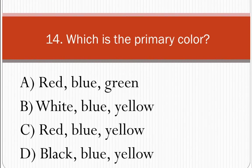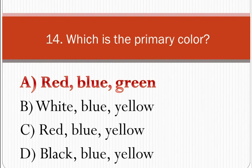Which is the primary color? We have three primary colors. The answer is Red, Blue, and Green — these are the primary colors.